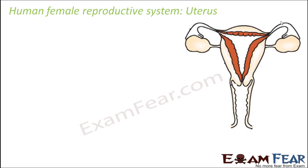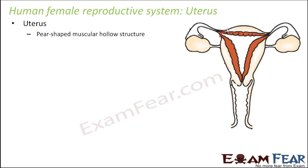Let us now talk about the uterus. It is also known as the womb. It is a pear-shaped, muscular structure made up of muscles, which is why it can undergo contraction and expansion. The fetus develops here.